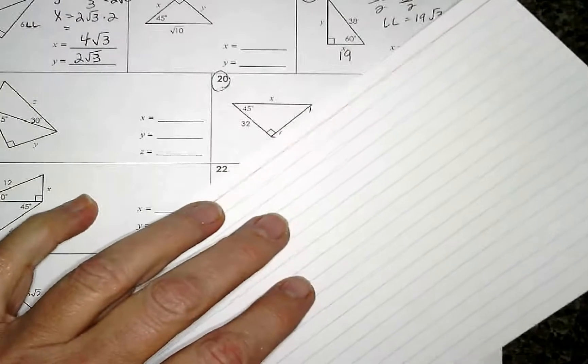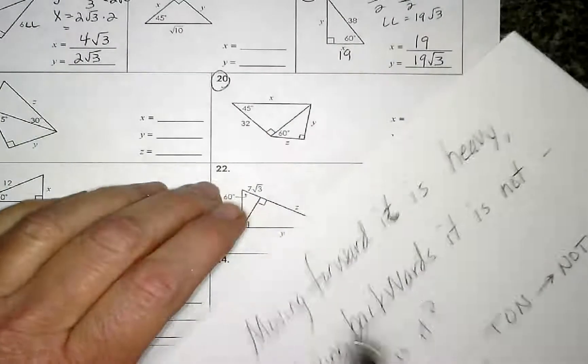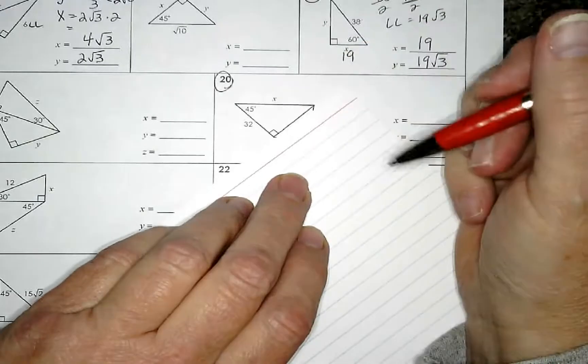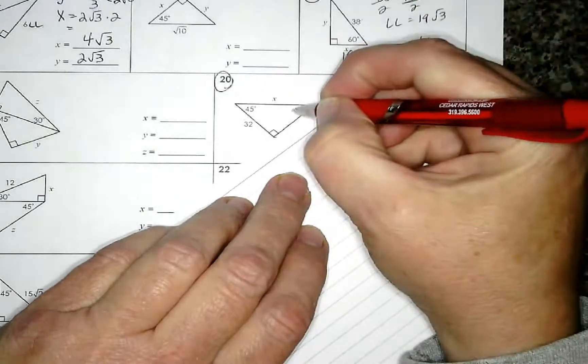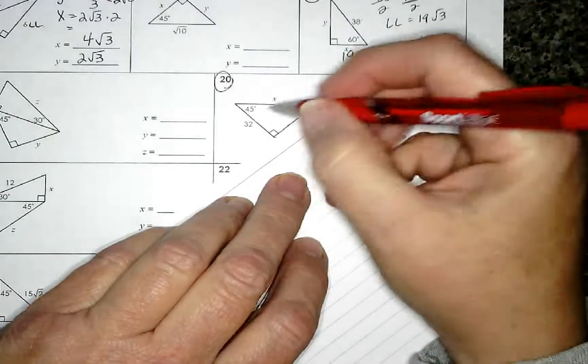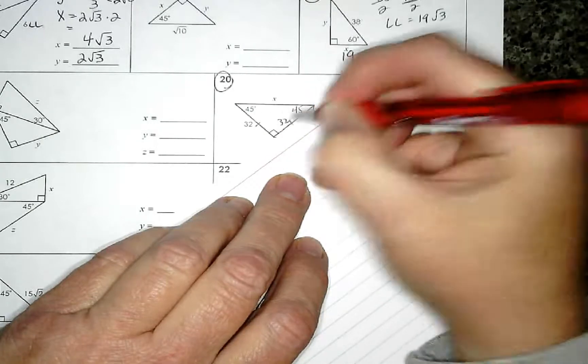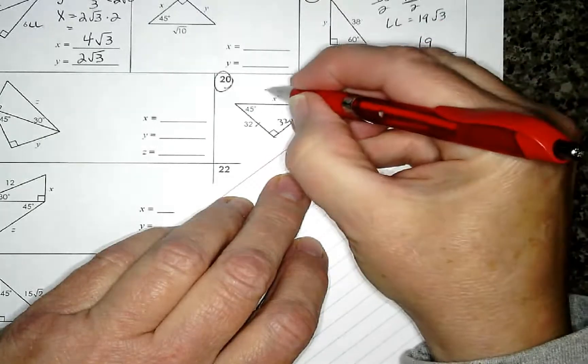So sometimes you might have to just cover up. Cover up and now we're just going to look at this little 45, 45, right? Because if one is 45, they both are. We know the two legs are going to be the same. So this is going to be 32, we know the hypotenuse is the leg square root of 2. See how easy that was? We just got that first one done.